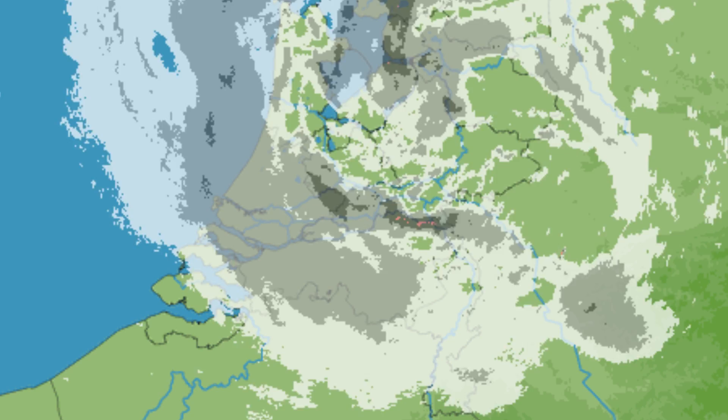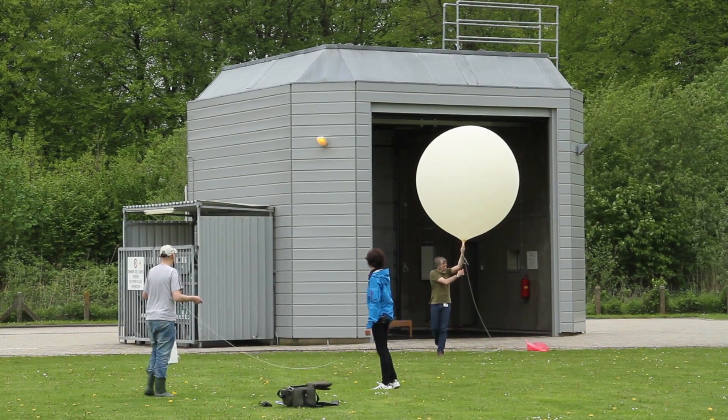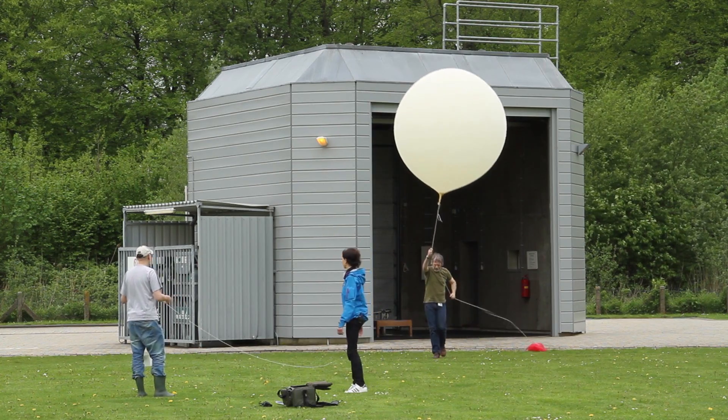Here we are at the roof of KNMI. In the background, you see the radar which we use for weather prediction. It actually shows us where there is rain in our country. Also, to have a look higher in the atmosphere, we let up air balloons.